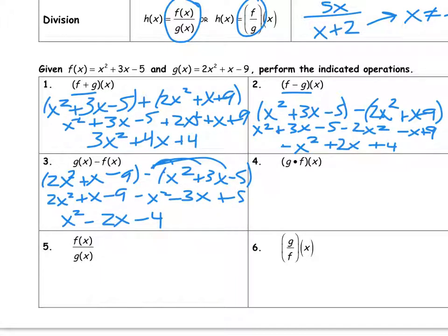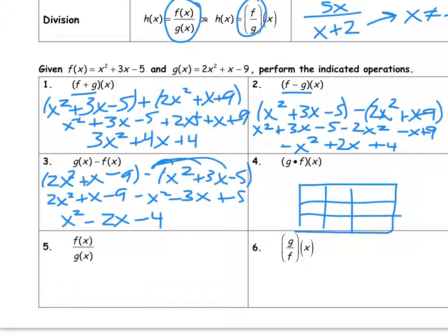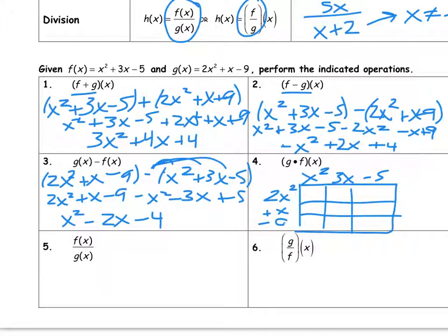For multiplication, to save time I'm just going to set it up. If we are multiplying these two functions, that's where we're going to have a 3 by 3 box: x squared, 3x minus 5, and 2x squared plus x minus 9. So pause the video and finish that multiplication.